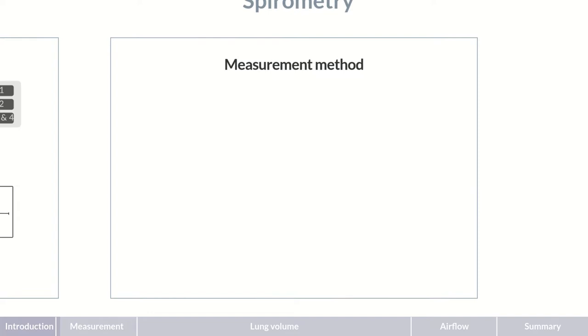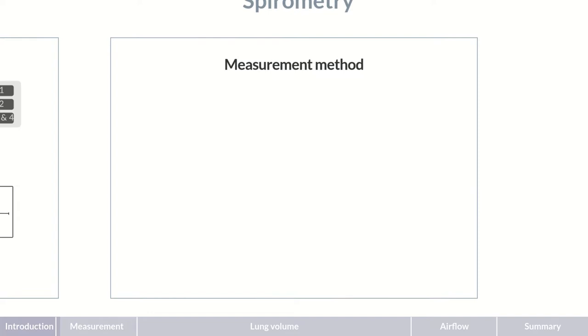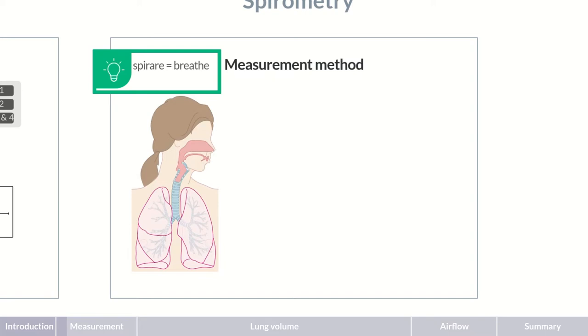Let's start by looking at the spirometry procedure. The term spirometry stems from the Latin word spirare, meaning to breathe. So spirometry basically means the measuring of breath. It quantifies the volume and speed of air that is inhaled and exhaled.